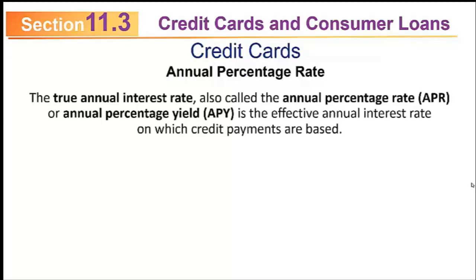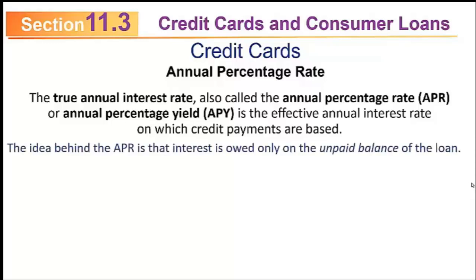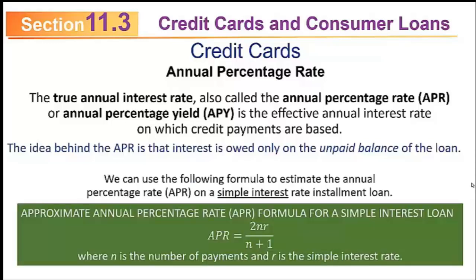Now let's discuss the annual percentage rate. The true annual interest rate — called APR, or annual percentage yield, APY — is the effective annual interest rate on which credit card payments are based. The idea is that interest is owed only on the unpaid balance of the loan. The formula to estimate the APR on a simple interest installment loan is: APR = 2NR / (N + 1), where N is the number of payments and R is the simple interest rate.